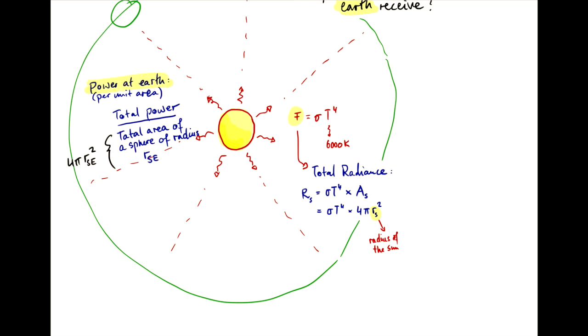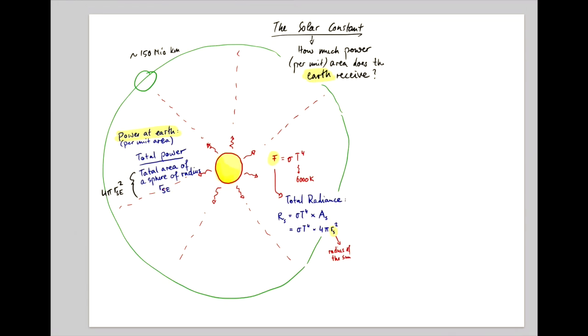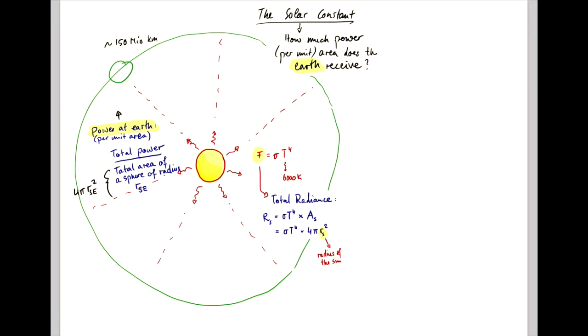So the power per unit area that arrives at Earth's orbit, let's call that S. S is equal to sigma times T to the 4 times the area of the emitting body, the Sun,